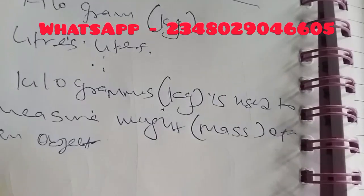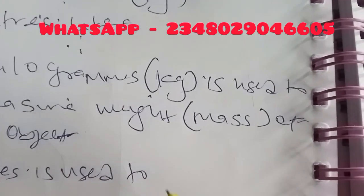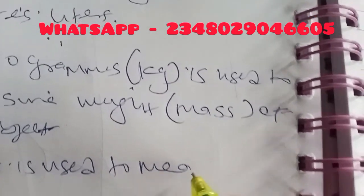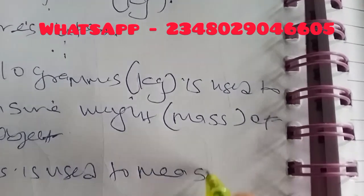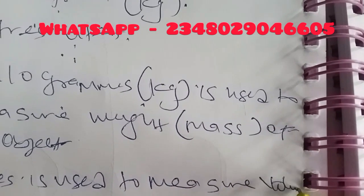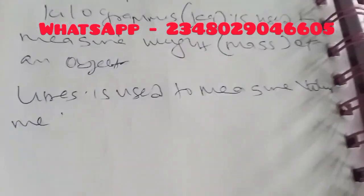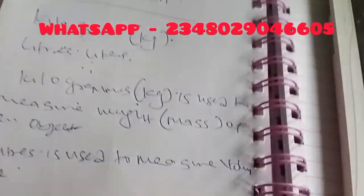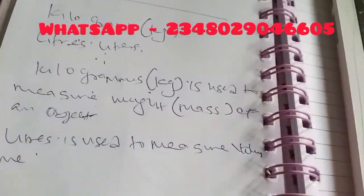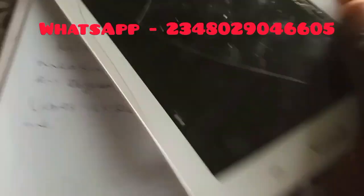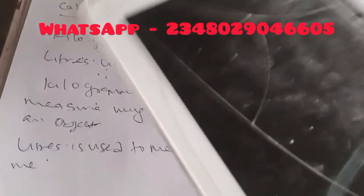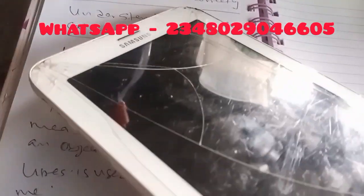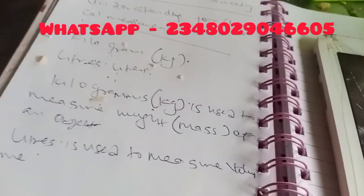Kilograms is used to measure weight, while liters is used to measure volume. So now you know that when we talk about kg, we use it to measure body weight or body mass — for example, if I want to measure the weight of this phone, I will use a scale that measures in kg.